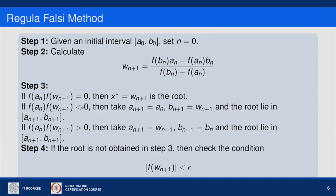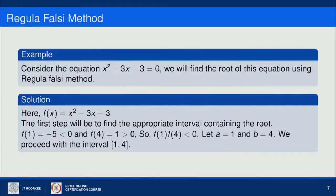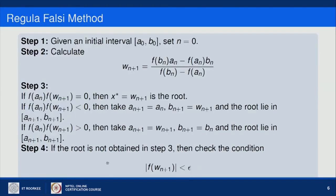If negative, it means the root lies between a_n and w_{n+1}, so we update the interval accordingly. In step 4, if the root is not yet found, we check if |f(w_{n+1})| < ε (the permissible error). If not, we go back to step 2. If this inequality is satisfied, then w_{n+1} is the root.